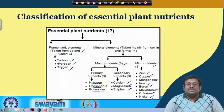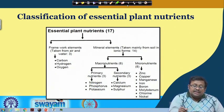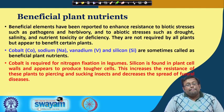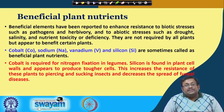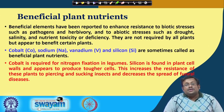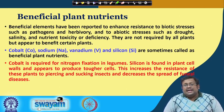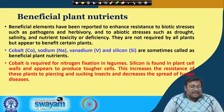This slide shows the classification of essential plant nutrients. Let us also discuss beneficial plant nutrients. Beneficial elements have been reported to enhance resistance to biotic stresses such as pathogens and herbivory, and to abiotic stresses such as drought, salinity, and nutrient toxicity or deficiency. They are not required by all plants, but appear to benefit certain plants, which is why they are not considered essential plant nutrients.